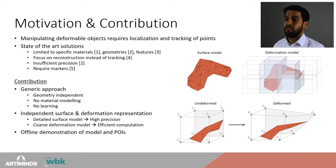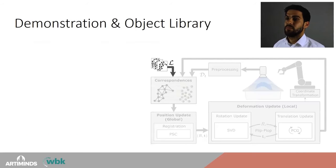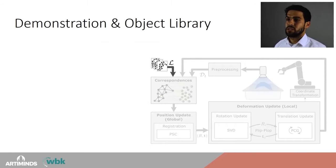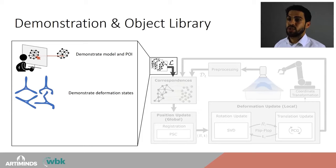We implemented a processing pipeline that works iteratively to estimate the object's deformation from each observation. Knowing the deformation state allows tracking of user-defined points on the object. In an offline procedure the user demonstrates the model and points of interest. Existing approaches usually struggle with large initial deformations; we address this by demonstrating the object in multiple deformation states combined into an object library — this only has to be done once per new object type. During online execution, the deformation estimation is initialized with the most similar model from the library.